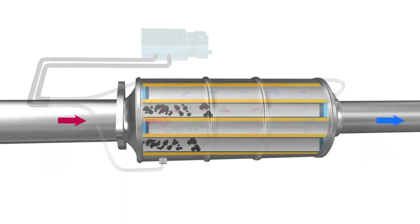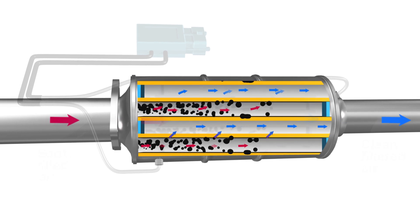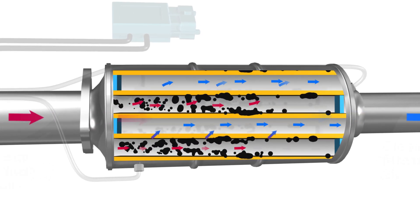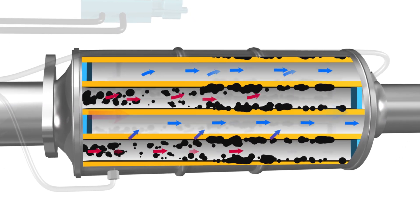The collected particulate matter in a diesel particulate filter, if not removed, can create an obstruction to exhaust gas flow.